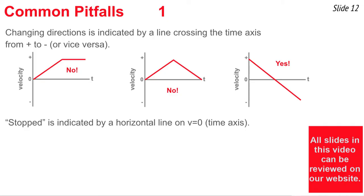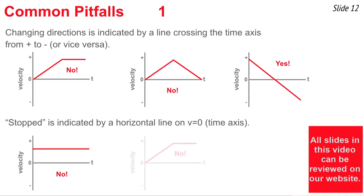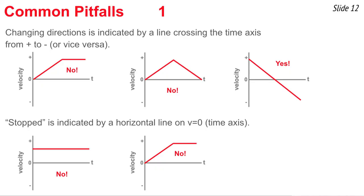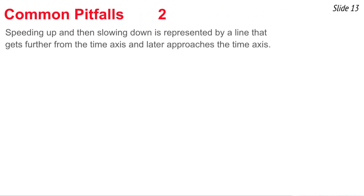A second common pitfall: students misinterpret 'stop.' Stopping means the line is on the time axis at v equals zero. A horizontal line above the axis is not stopping — that's constant positive velocity. An object that speeds up and then moves with constant velocity has not stopped. A line plotted on the v equals zero mark indicates the object has actually stopped.